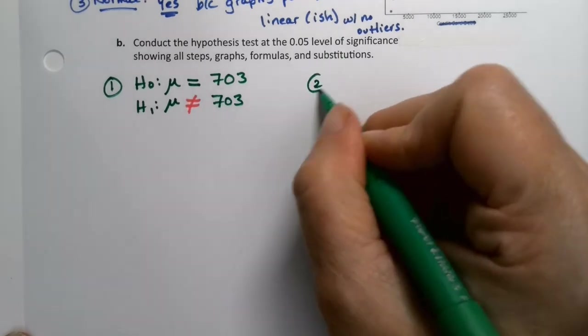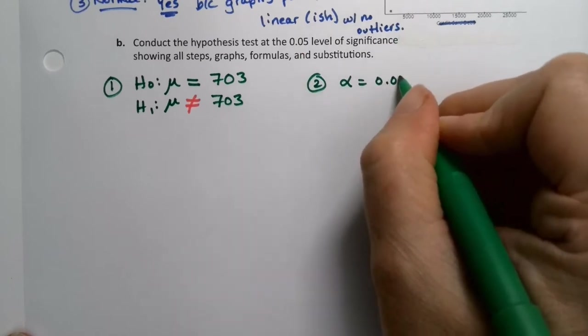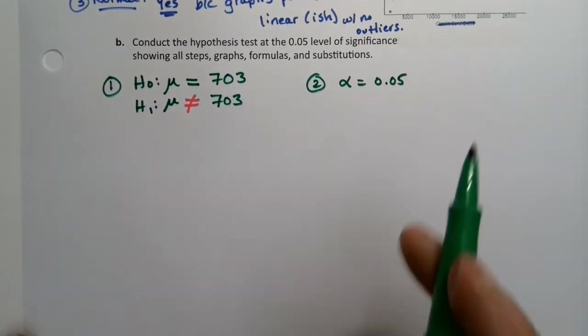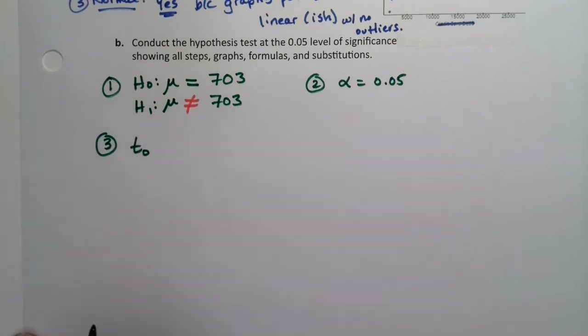Step two, alpha. Alpha is your level of significance, which is 0.05. It's always given to you. Alpha is your favorite step. Unfortunately for you, it's only worth one point, but, you know, take what you can get.